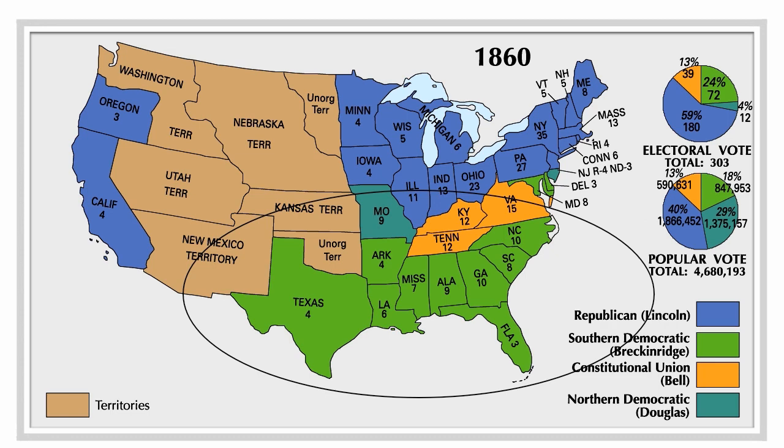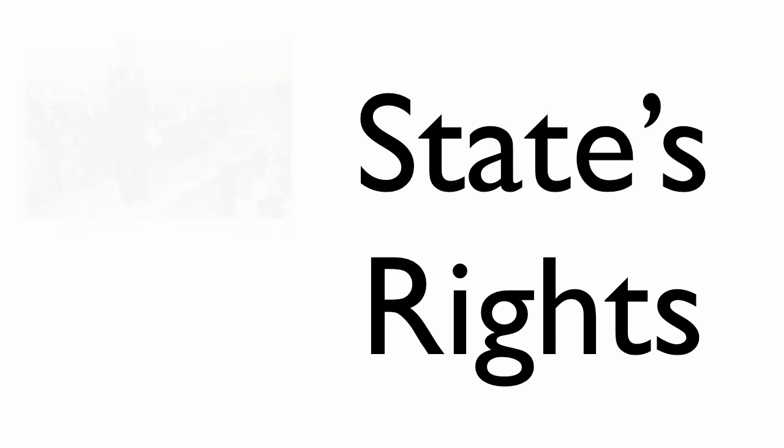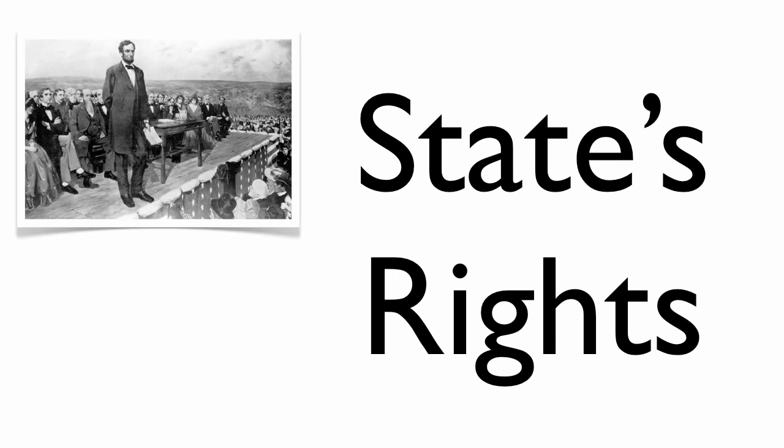Remember our conversation in Lesson 1 about states' rights? When Abraham Lincoln won the election without winning a single Southern state, it meant that the North had elected the leader for the South. The Southern states saw no reason to be part of a country that elected a leader that none of them voted for.